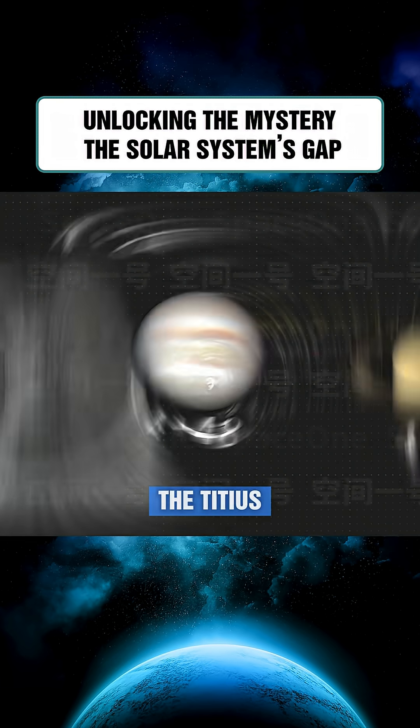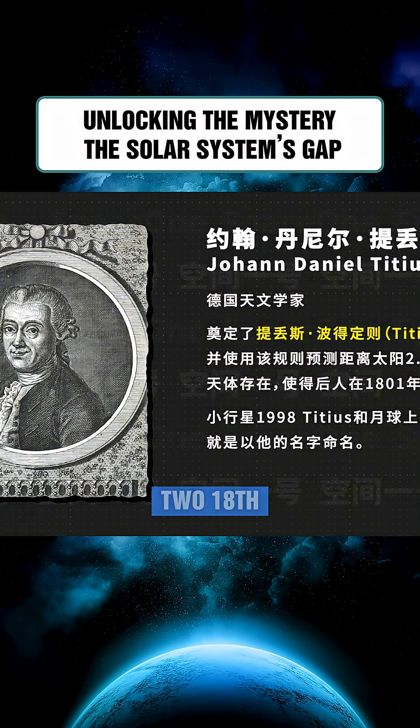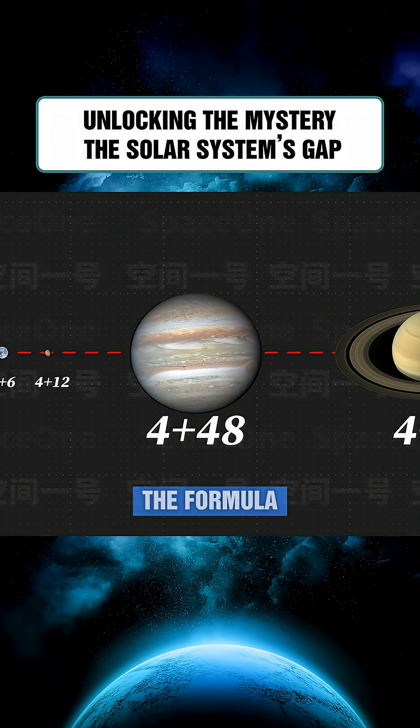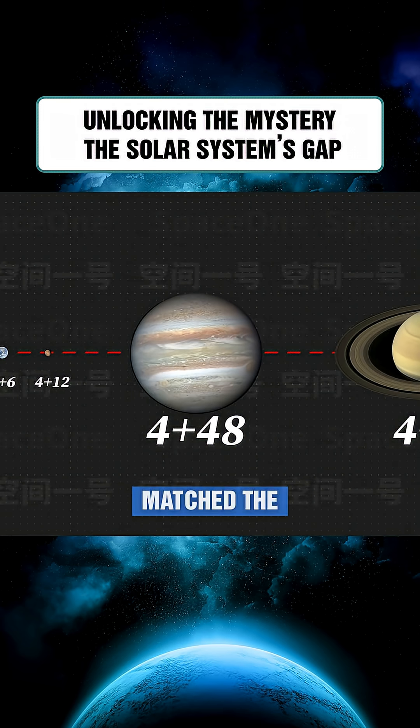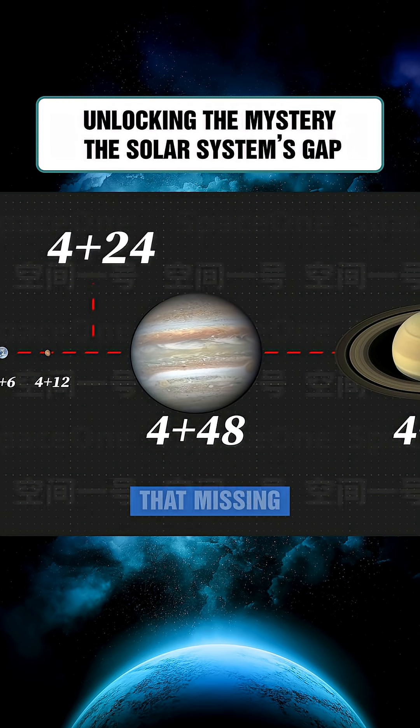This is the Tideous Bode Law, named after two 18th century German astronomers. The formula wasn't perfect, but it matched the known planetary distances surprisingly well, except for that missing spot.